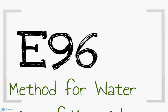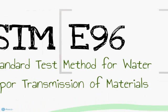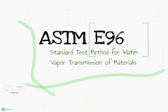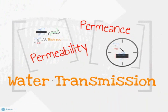This video covers the test method ASTM E96, standard test methods for water vapor transmission of materials. There are two terms to quantify water vapor transmission: permeability and permeance.